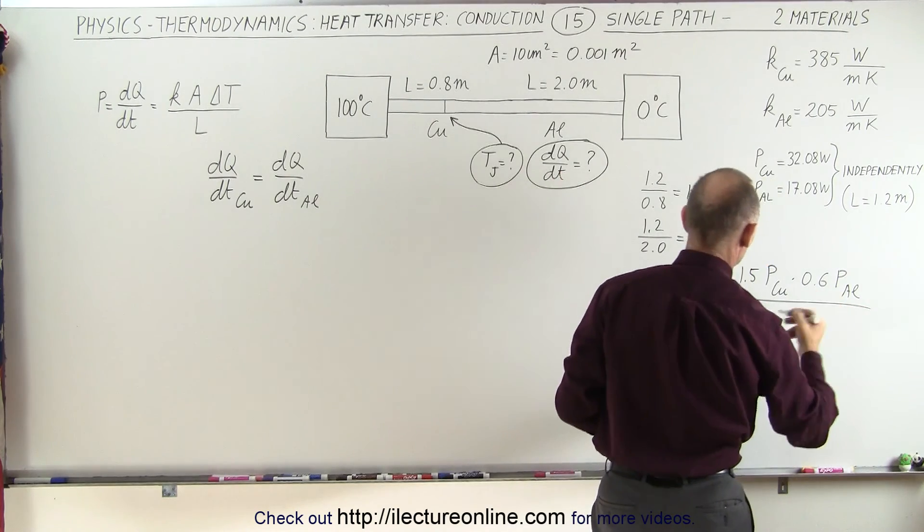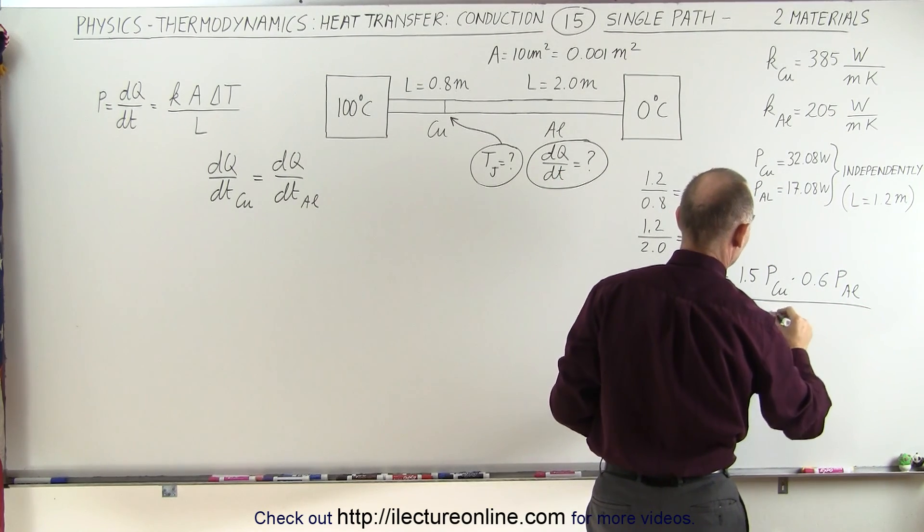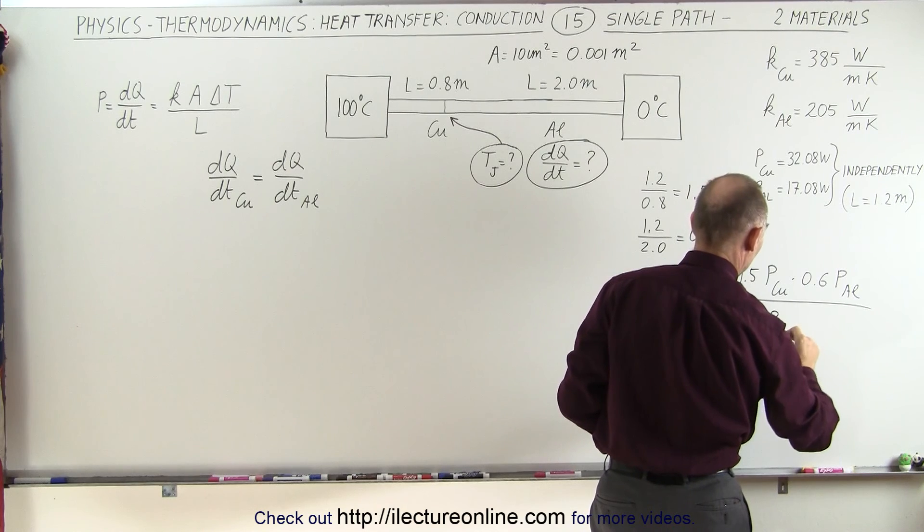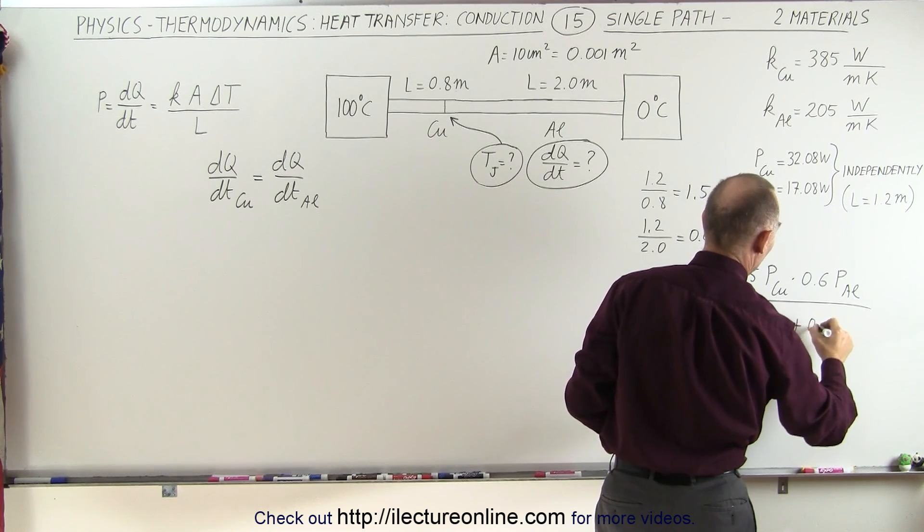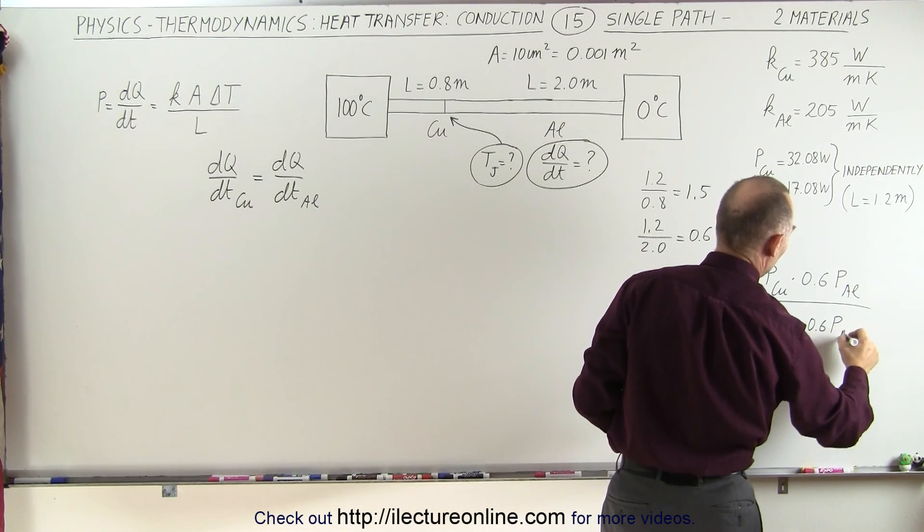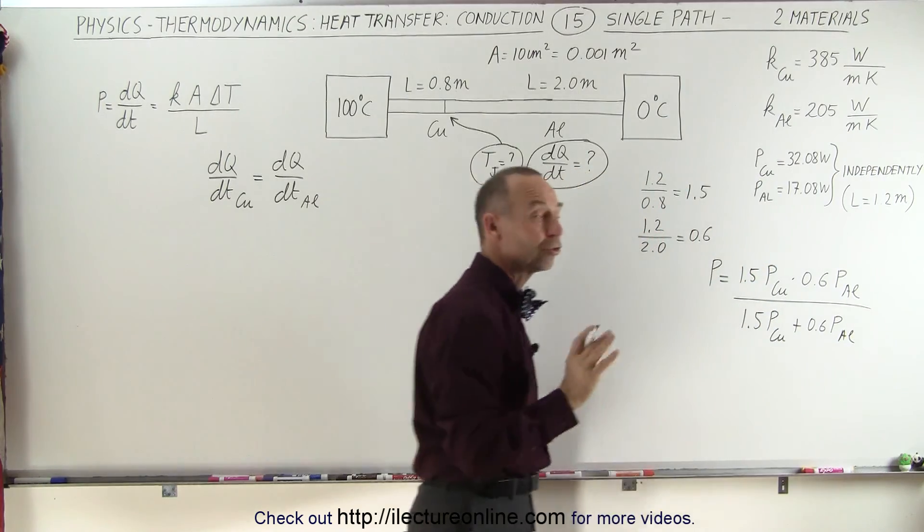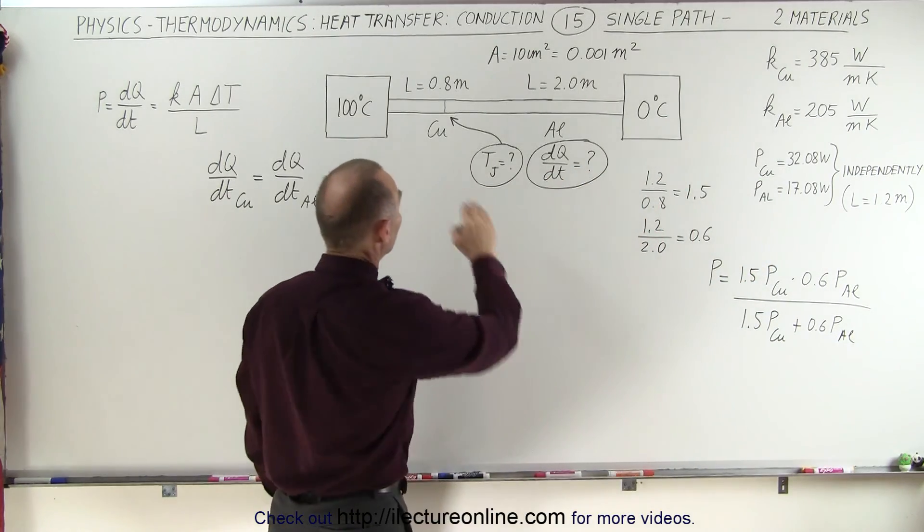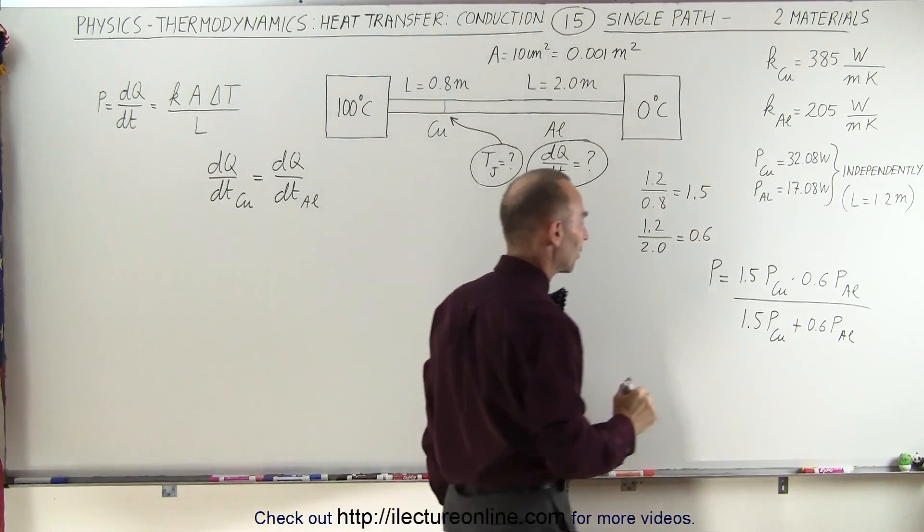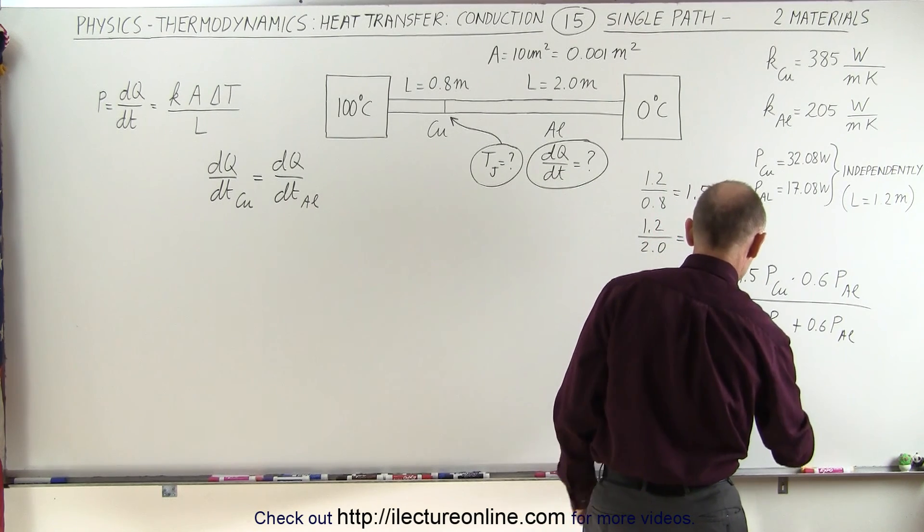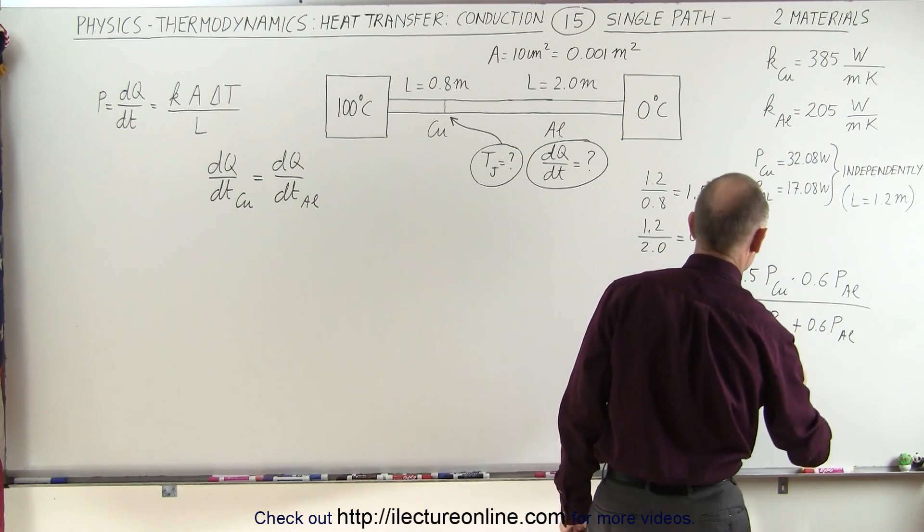Now we divide that by the sum of the two, 1.5 times the power transferred in the copper section plus 0.6 times the power transferred to the aluminum section. And that should give us the power transferred to the entire two sections combined.